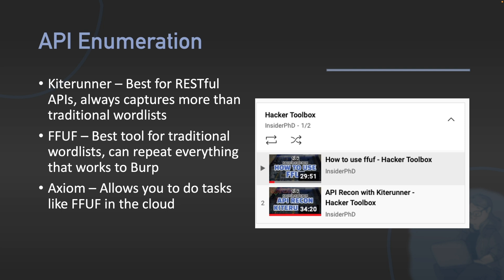For API-specific enumeration, I really recommend Kite Runner — by far the best tool for RESTful APIs. I've made a video on it. It always captures way more than traditional word lists. If you want to use a word list, I really recommend FFUF — I've also got a video on that. One of my favourite things about it is that it can replay everything that works into Burp, so even if you don't pay for Burp, you can still get some features from FFUF.